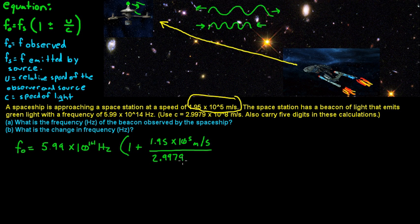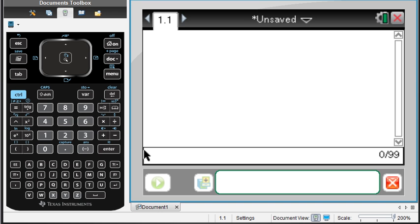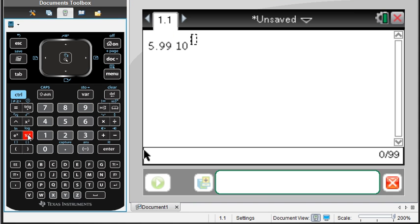So 2.9979 times 10 to the 8th meters per second. Alright, so let's pop up and open our calculator here. We've got 5.99 times 10 to the 14th, put this in parentheses,